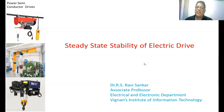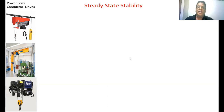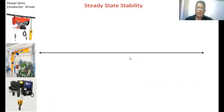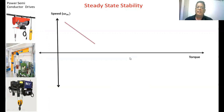If any disturbance occurs at that point, whether the motor regains the original speed or not — that is representing the steady state stability of an electric drive. So before going to study steady state stability, it is highly dependent upon the motor speed-torque characteristics as well as the load speed-torque characteristics. On the x-axis we have taken the torque and on the y-axis we have taken the speed. This is the profile of the torque developed by the motor, and this is the load torque.